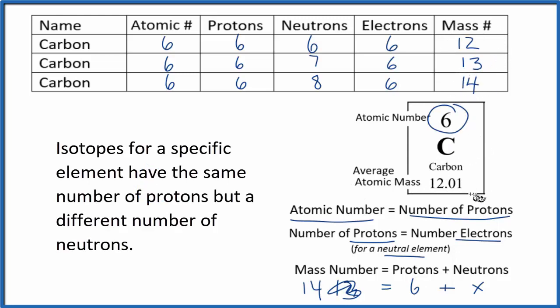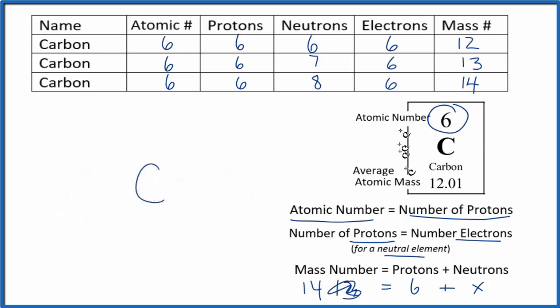Sometimes you'll see carbon written a little differently than on the periodic table. They'll take the atomic number and put it right here. And then they'll put the mass number up here. So we call this carbon-12. So this isotope is carbon-12 because its mass number is 12. So we put the 12 here, the atomic number here.